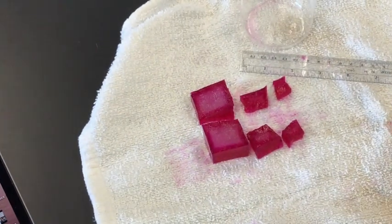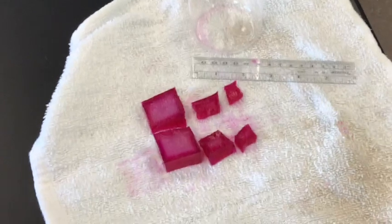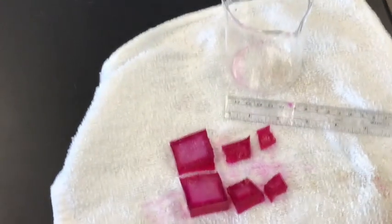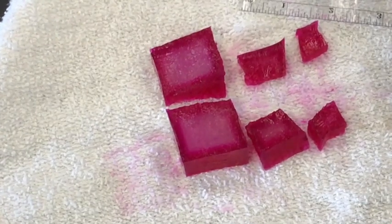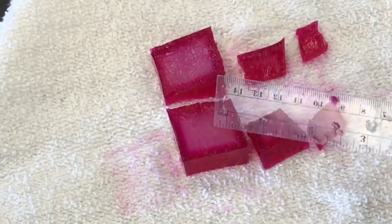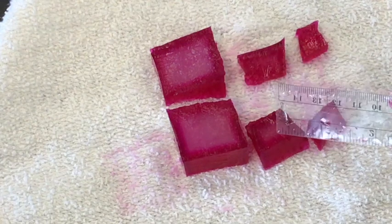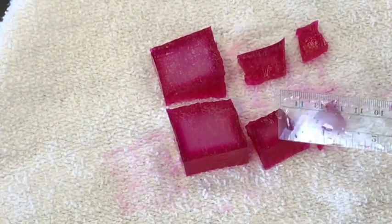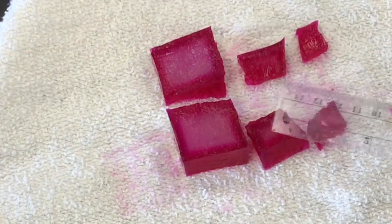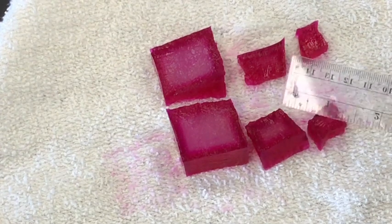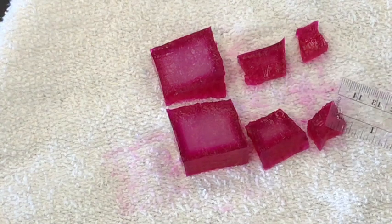All right, so that is pretty cool looking. Definitely you can see that the largest cube did not go through quite a color change in the center. The middle size cube, two centimeter cube, still a little lighter in the middle but definitely more color change. And then the small cube...